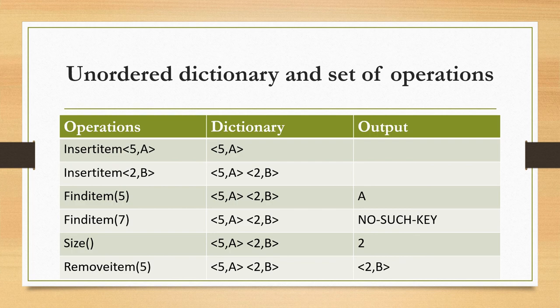Find item of key 7 — we inserted only (5, a) and (2, b), and the key values are 5 and 2. We did not insert key value 7, so the output will be no such key. Size: as we have only 2 values, the output will be 2. Remove item of key value 5 — so (5, a) will be deleted and the output will be (2, b). This is about the unordered dictionary.